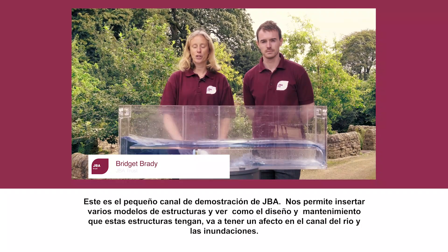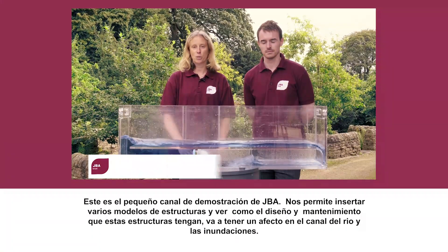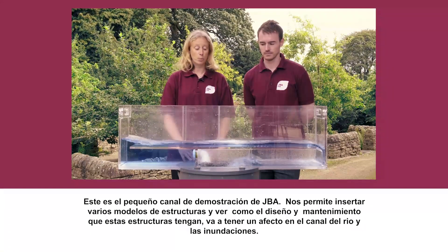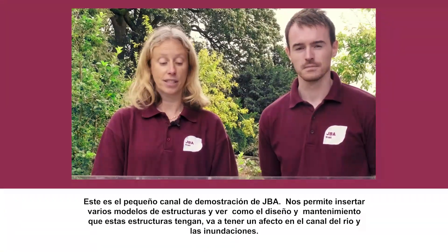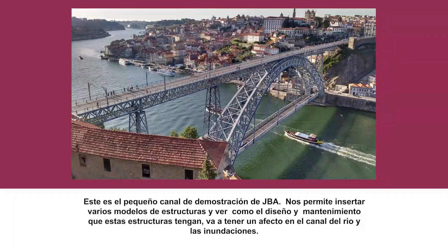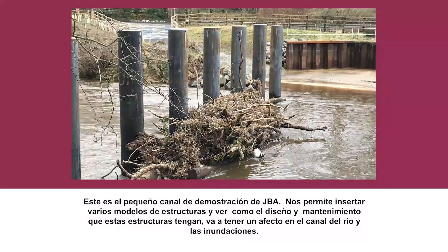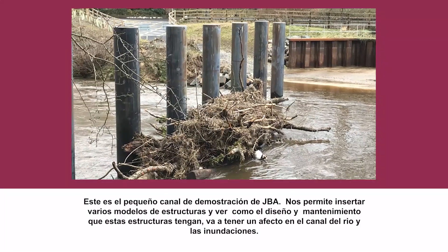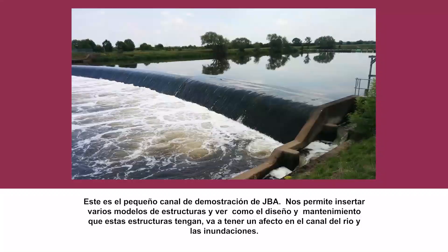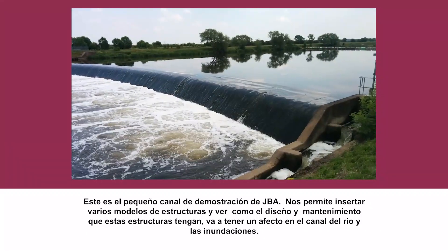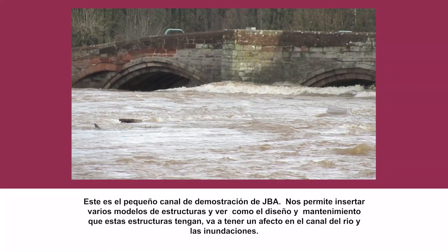This is the JBA Trust mini flume. It shows water in a simple channel. We're able to insert various different models of engineered structures and we can see the effect of these structures on flooding, and we can see how good design and maintenance can have an effect on the river channel.